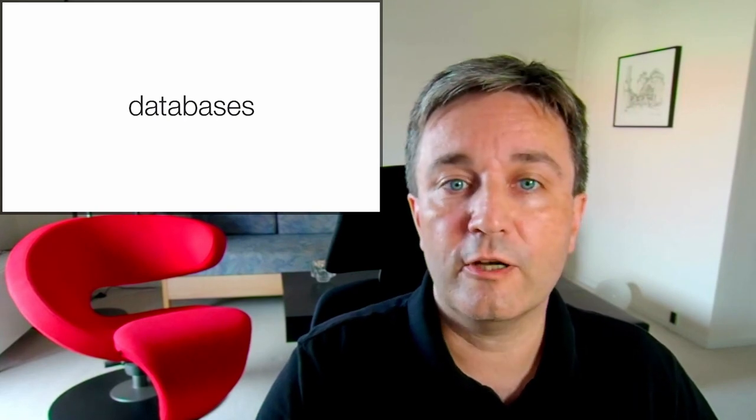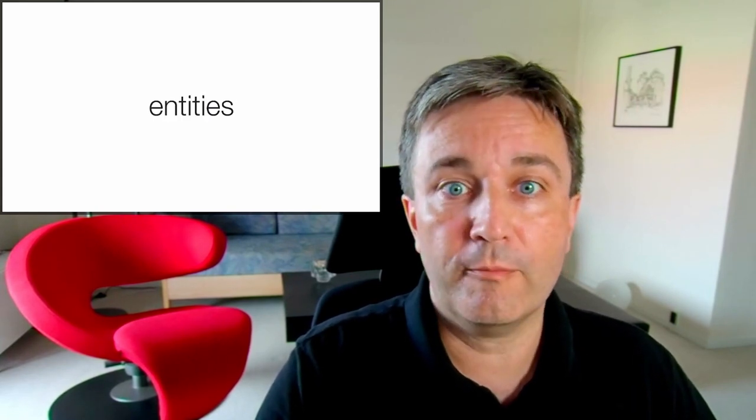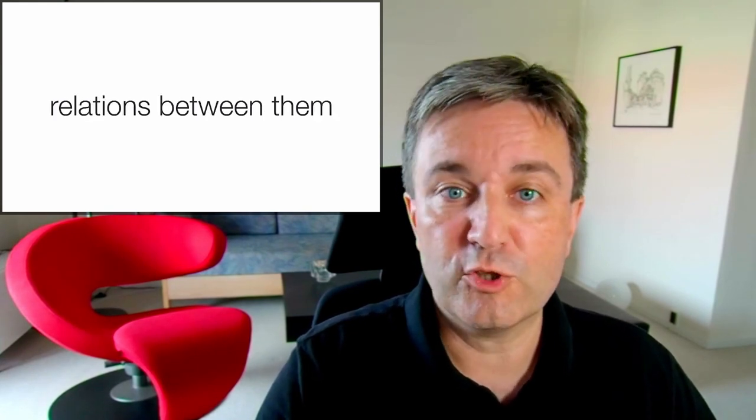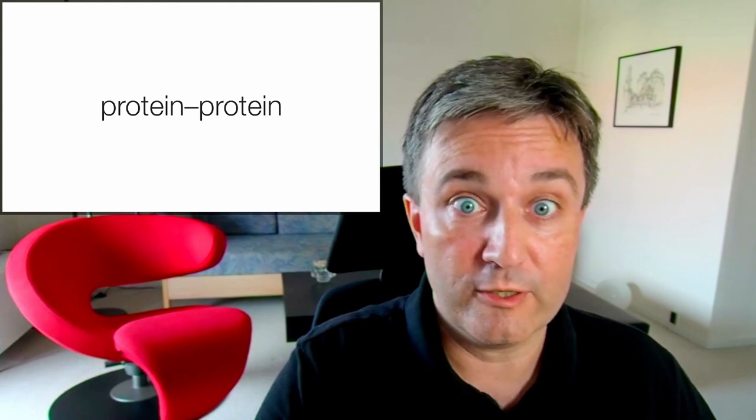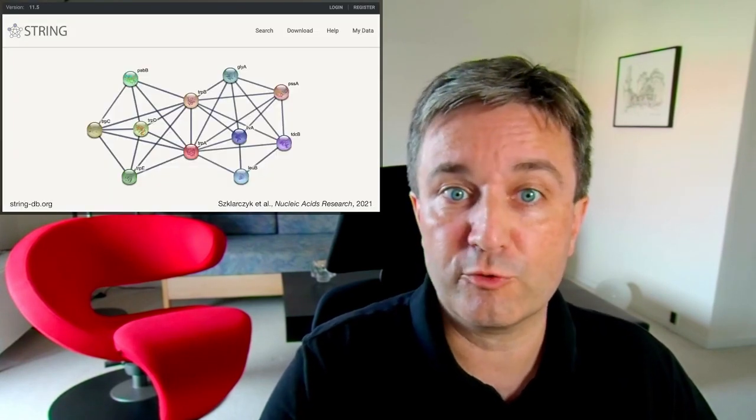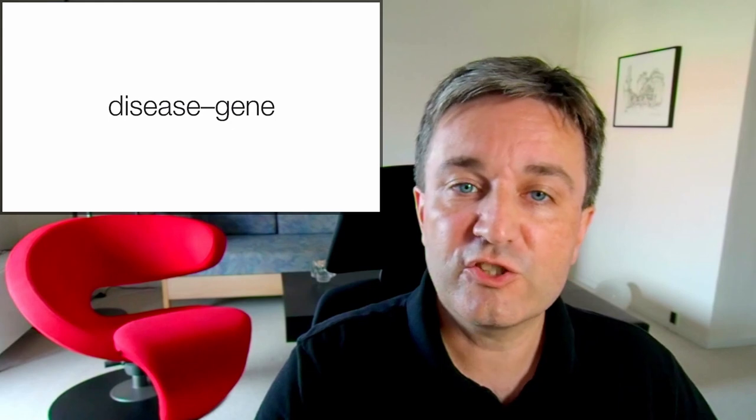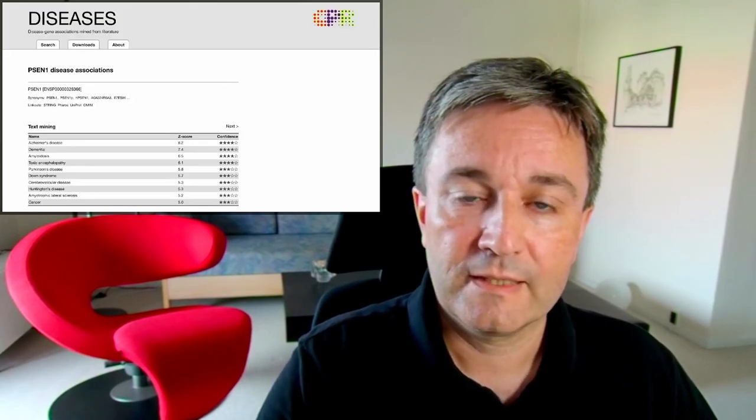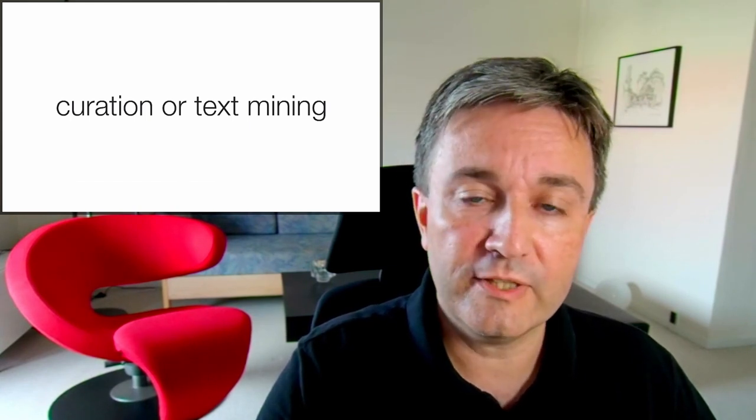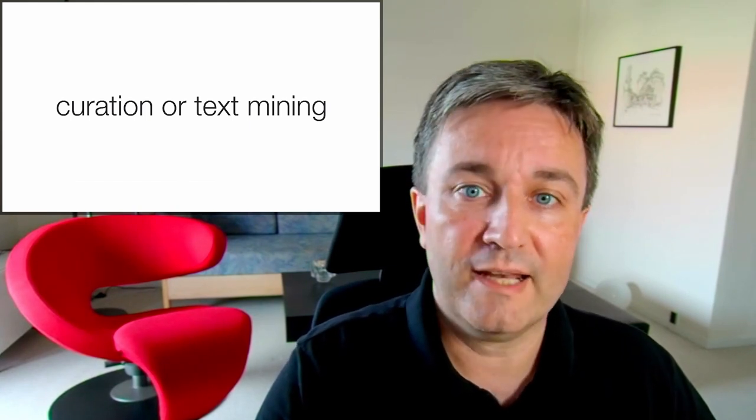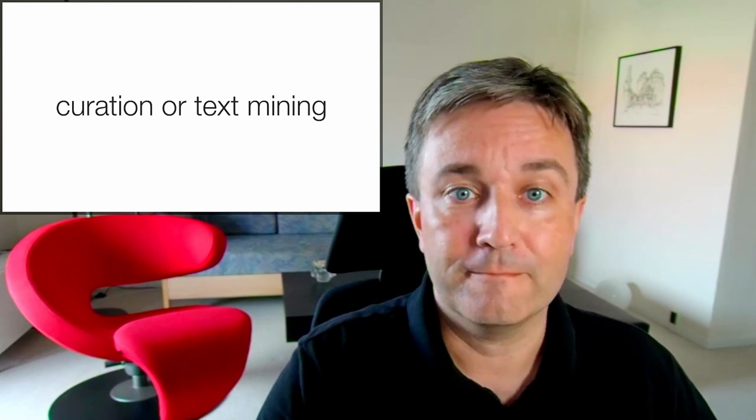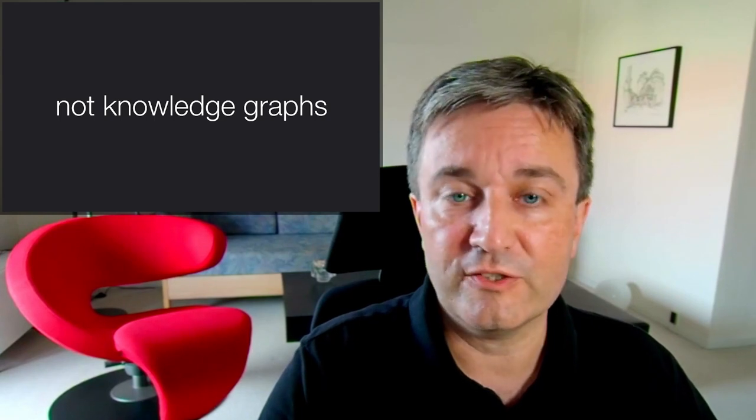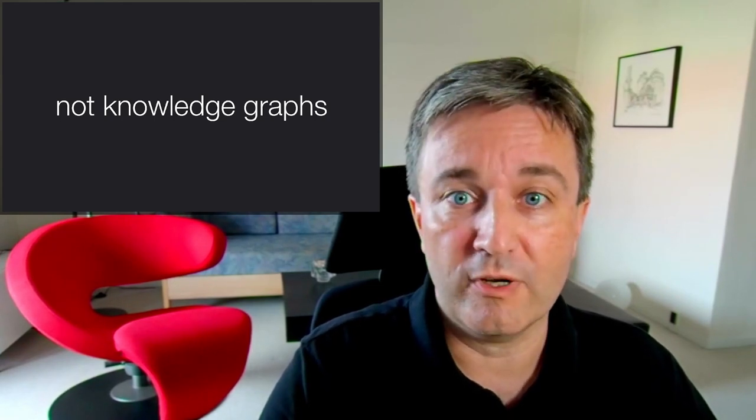We also take a lot of information from databases. This includes information about entities, such as genes and proteins, and relations between them, which could be functional associations between proteins, like you would get them from the string database, and disease gene associations, which you could get, for example, from the diseases database. This knowledge can either come from manual curation of the literature, or by automatically text mining the literature. It's important to understand that even though we have knowledge in these databases, they're normally not considered knowledge graphs themselves.